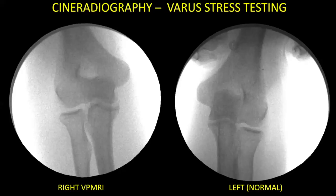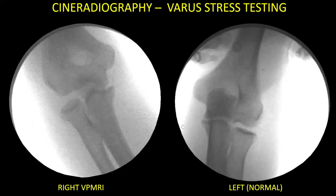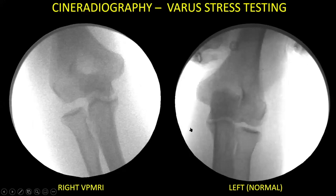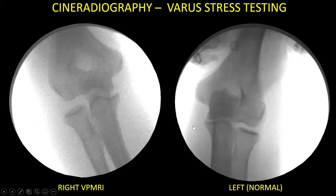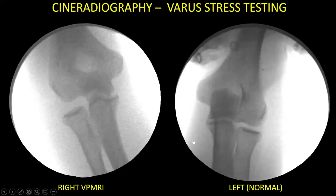In more chronic presentations where pain and swelling have subsided, stress views may be utilized during surgery. The patient demonstrates widening of the radiocapitellar and lateral ulnohumeral joints during varus force, and the opposite elbow is also stressed for comparison.